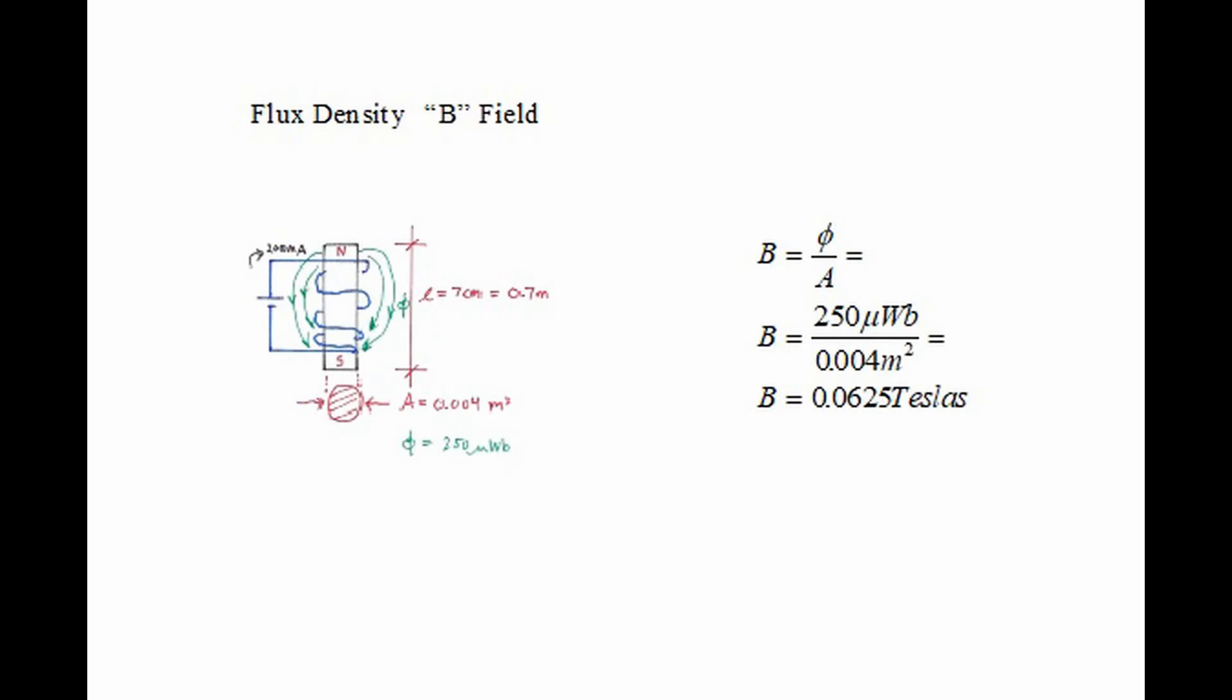Let's say our bar magnet has a cross sectional area that is round with an area of 0.004 meters squared, and the flux we have created we can measure to be 250 microwebers. A weber is 10 to the 8th lines of force, which is huge, so most of the time in practical electronics we're dealing with milliwebers or microwebers.